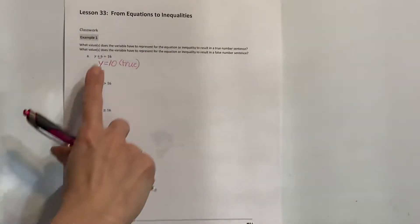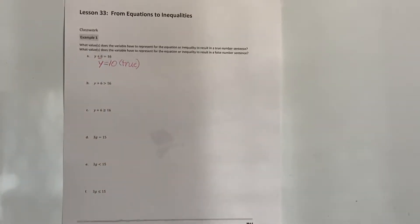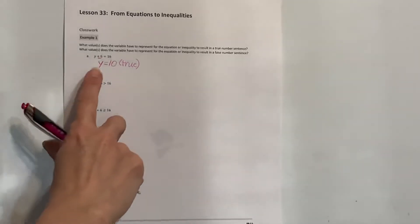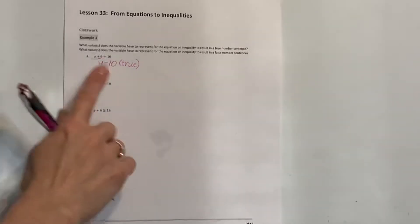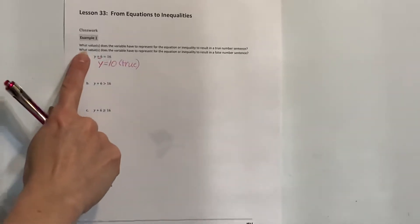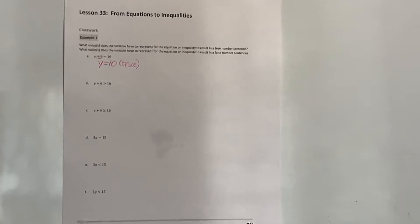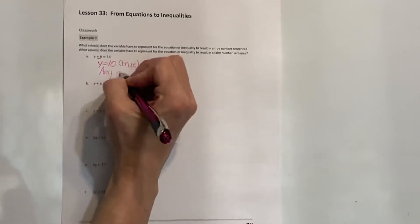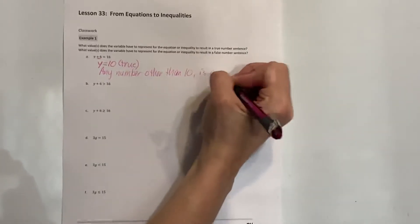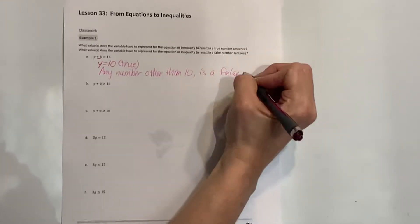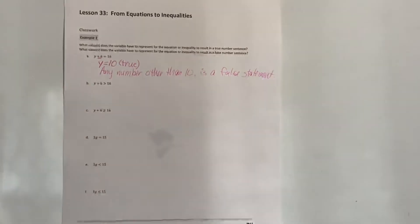Because this says equals, and referring back to what we talked about on Monday — if it's an equal sign, there's only going to be one value that makes the statement true. So 10 is the only value that can make this statement true. A false number sentence would be any number other than 10.